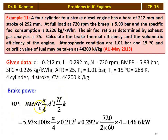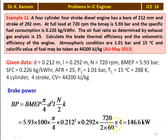Brake power = BMEP × (π/4) × D² × L × (N/2) × K. In a four-stroke engine, there is one explosion per two revolutions, so N/2; K is number of cylinders. Substituting: BP = 5.93 × 100 × (π/4) × 0.212² × 0.292 × (720/(2×60)) × 4 = 146.6 kW.